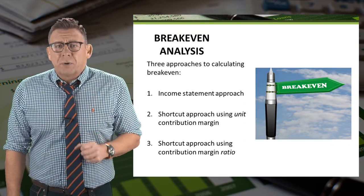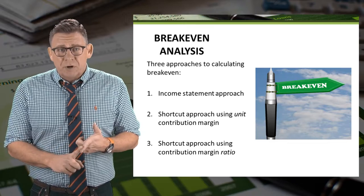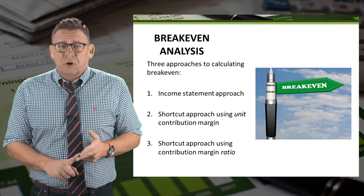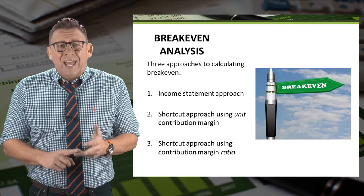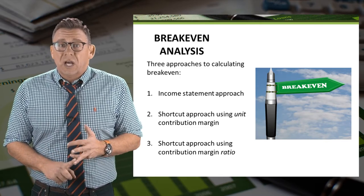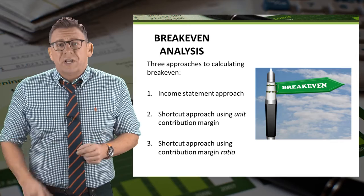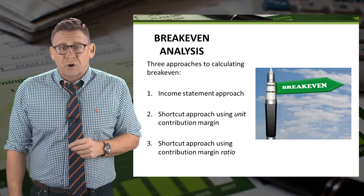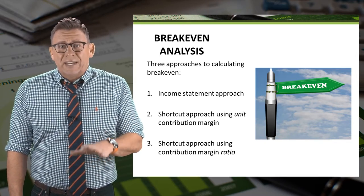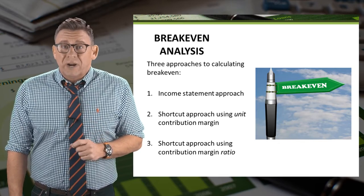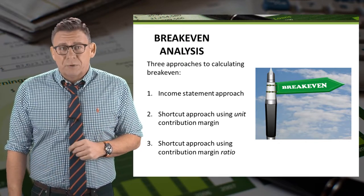There are three approaches to calculating breakeven: the income statement approach, a shortcut approach using the unit contribution margin, and a shortcut approach using contribution margin ratio. This short video will focus on the shortcut approach using contribution margin ratio, which is a much better way to do breakeven analysis than the income statement approach.